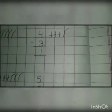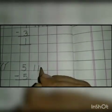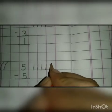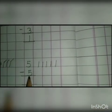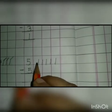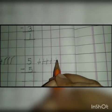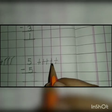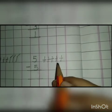Let's do the next sum. And this is number 5. Now we will draw 5 lines: 1, 2, 3, 4, 5. And this is number 5. Now we will take away 5 lines from these lines: 1, 2, 3, 4, 5. How many lines are left? Nothing. Nothing means 0. Now we will write 0.